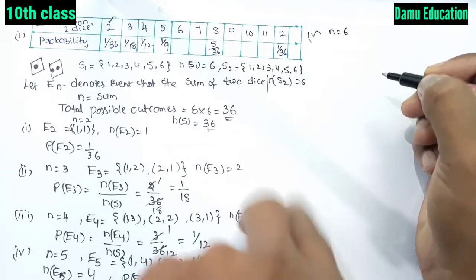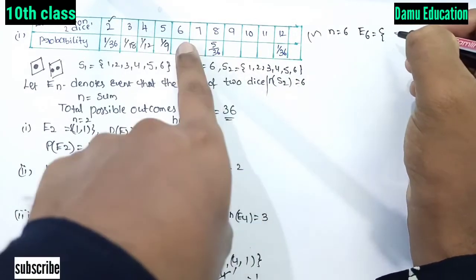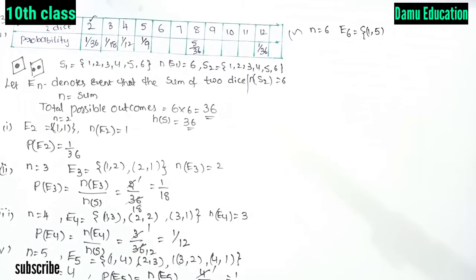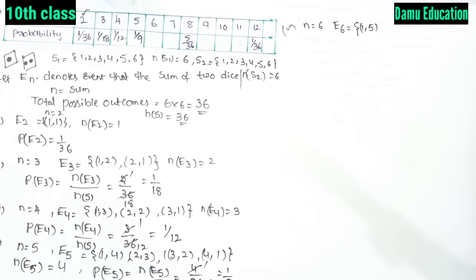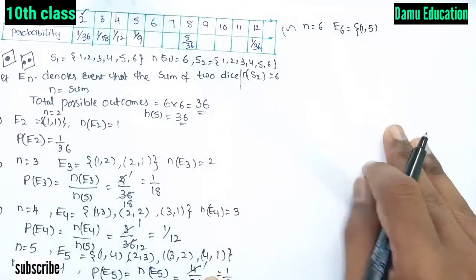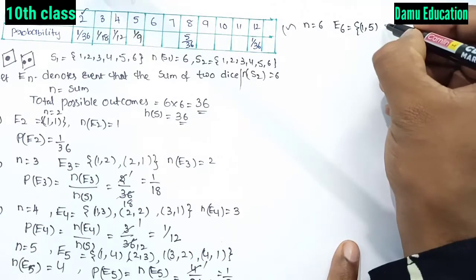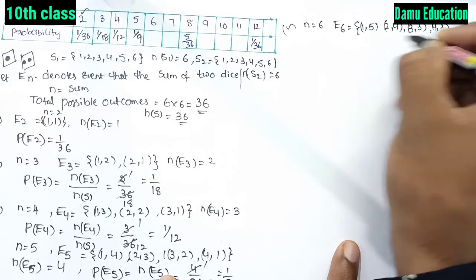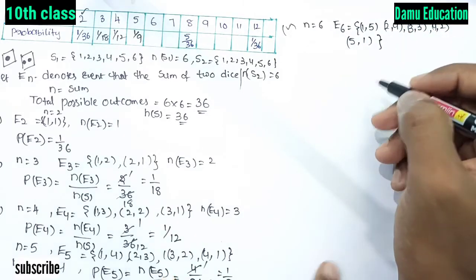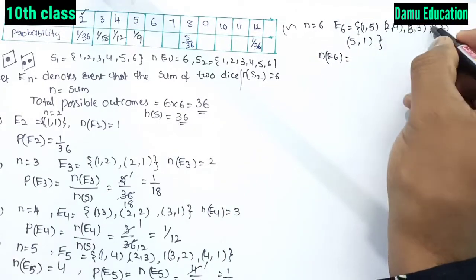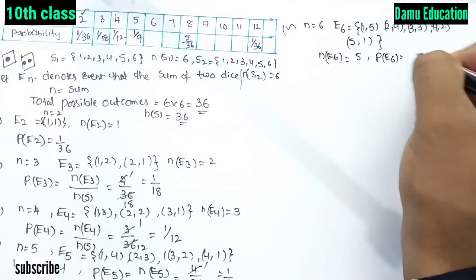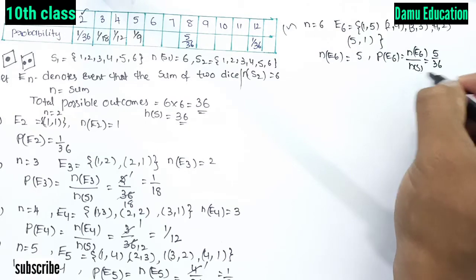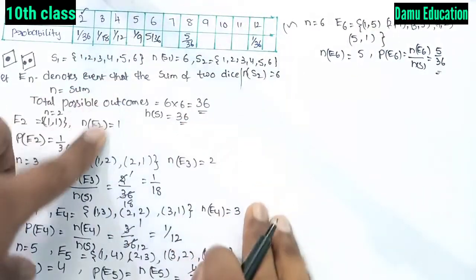For E6, the sum equals 6. The favorable outcomes are (1,5), (2,4), (3,3), (4,2), and (5,1). So n(E6) = 5, and P(E6) = 5/36.